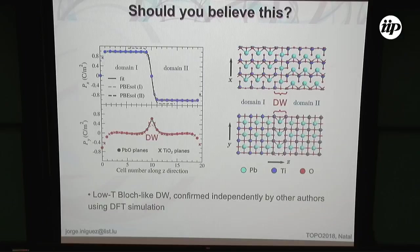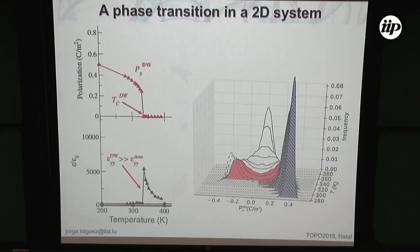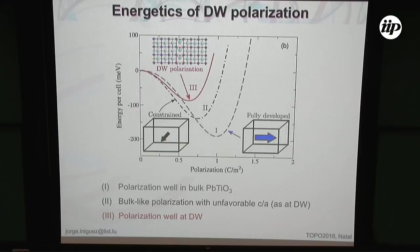This measurement of chirality we take as indirect evidence that our domain walls in lead titanate actually want to get polarized. There are many interesting things about a transition confined to a domain wall — this is like a two-dimensional material, so fluctuations work a little differently than in three dimensions. We have extremely broad histograms and a kind of order-disorder dynamics about the transition. The potential well at the domain wall is much more shallow than in bulk, and we can understand why.